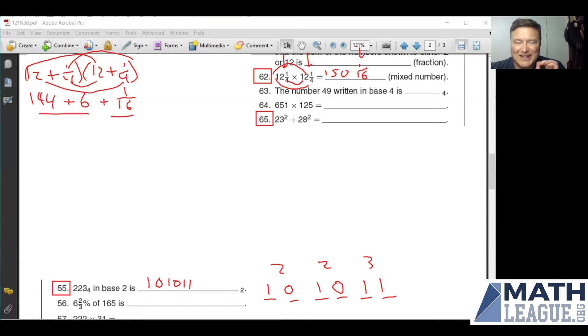Number 65 is kind of interesting. Check this out. I'll actually prove the trick to you, and then I'll show you how you use it as a shortcut. So what you want to notice here is that 23 is 20 plus 3 squared. And then I've got 28,